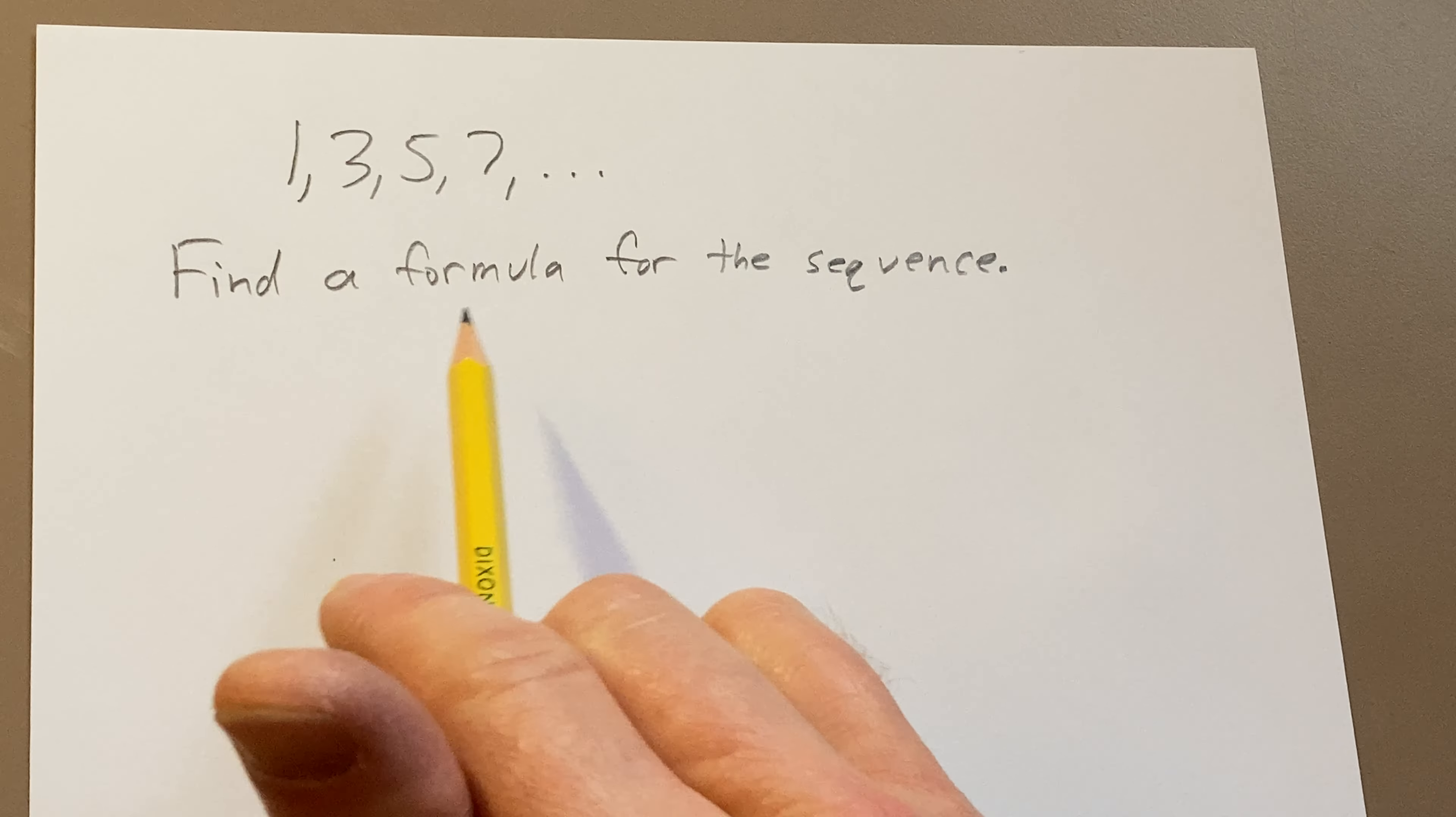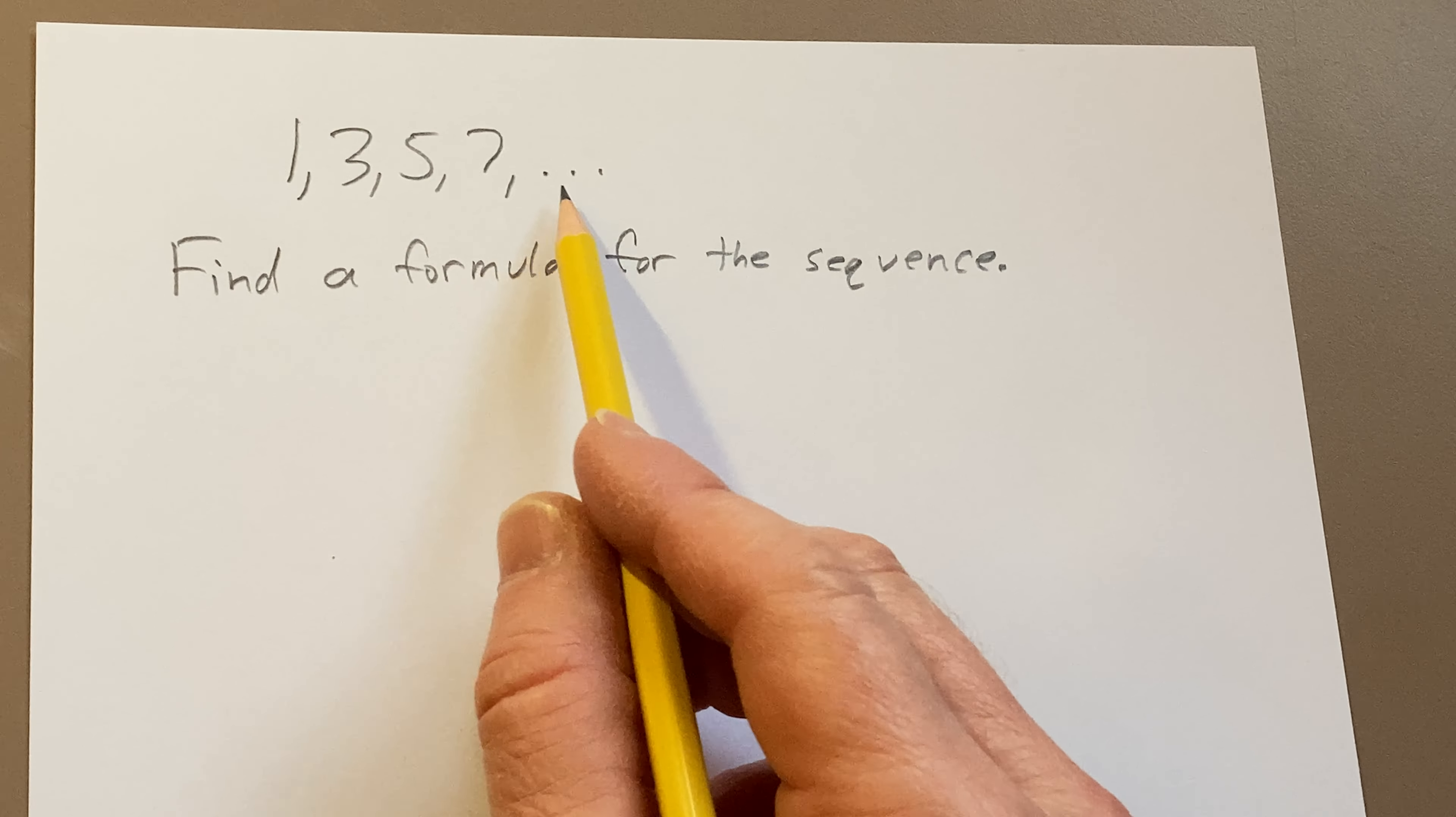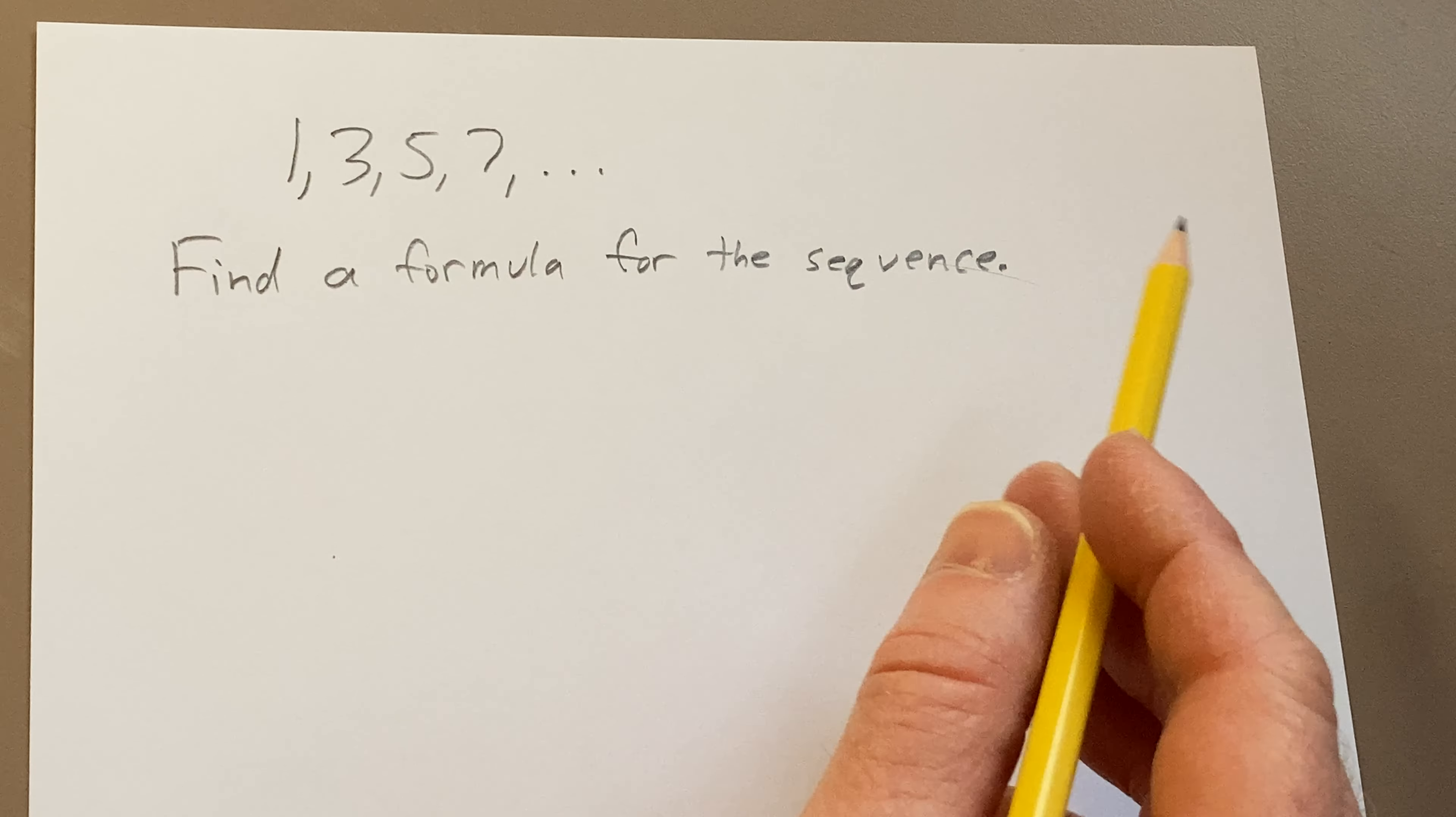Hi, in this video we're going to find a formula for this sequence. The sequence is 1, 3, 5, 7, and the three dots indicate that it goes on forever.